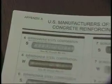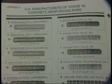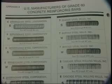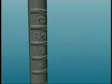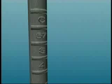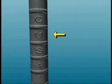The producing mill is shown by letter or symbol, and a company may have different symbols for each mill location. The bar size is shown by an Arabic number corresponding to metric bar sizes number 10 through number 36, number 43, and number 57, or inch-pound markings number 3 through number 11, number 14, and number 18.